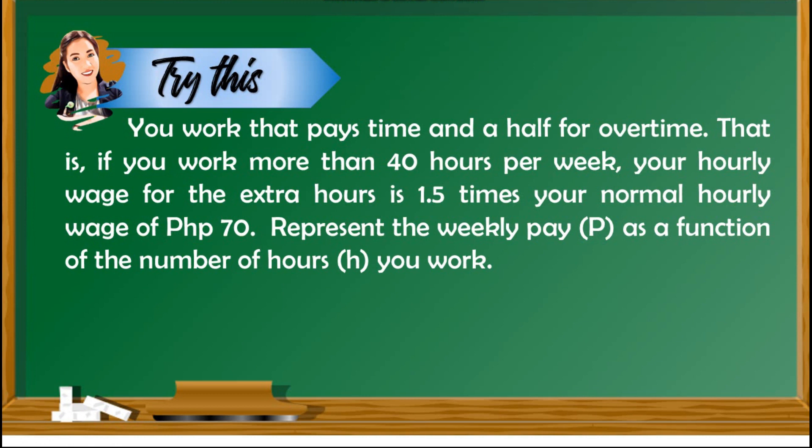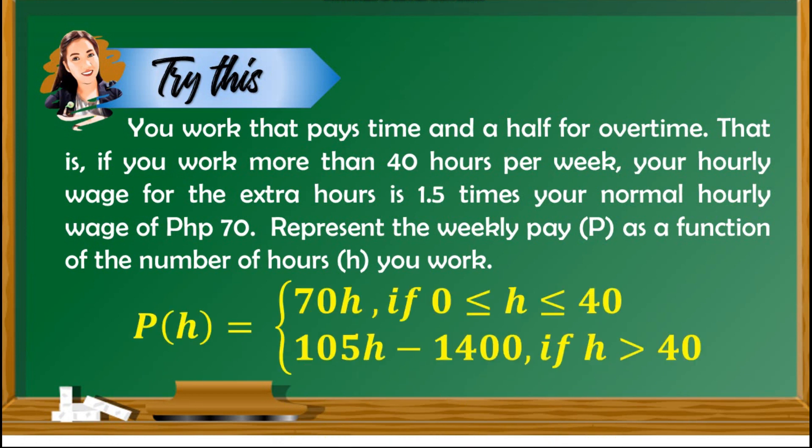After providing two examples using the concept of piecewise defined functions, apply what you have learned in this problem. You may pause the video to answer this item. Let's check our work: the piecewise defined function is P(h) = 70h if h is greater than or equal to 0 but less than or equal to 40, and 105h if h is greater than 40.